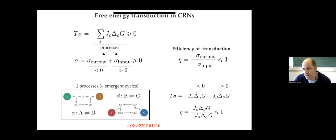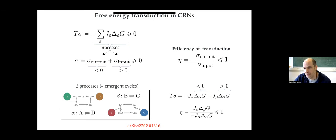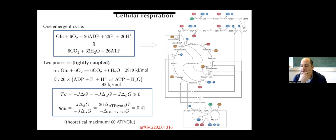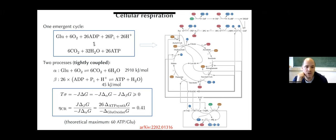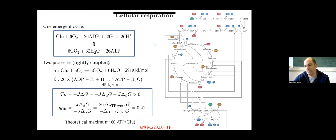The entropy production is the sum of the current along the first emergent cycle times its force, and the same for the second. If this term is positive — the reaction that will not happen spontaneously — it can happen thanks to the other. The efficiency is the ratio between the negative contribution and the positive one. That's the general recipe. Until now I've only looked at simple networks that could have been studied within the framework of Hill and Schnakenberg. But our framework becomes really essential for more complicated networks that contain nonlinearities, such as cellular respiration.